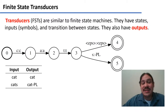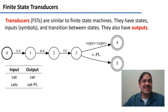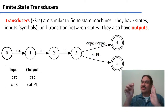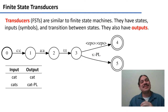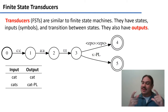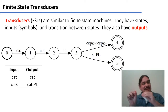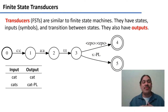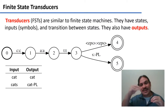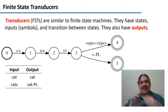Starting at the initial state 0, making the transition from 0 to 1, the transducer takes the input C and produces the output C — your output string has one character, C. In the transition from 1 to 2, you take the input A and produce the output A, so your string so far is "CA". In the transition from 2 to 3, you take the input T and produce T, giving you "CAT". Then, going from 3 to 4, you take an epsilon — nothing — and produce nothing, and exit through end state 4. This is the path where you take "cat" as input and produce the root "cat" as output.